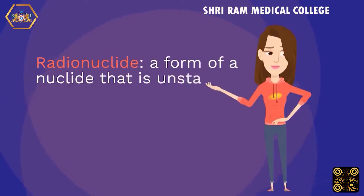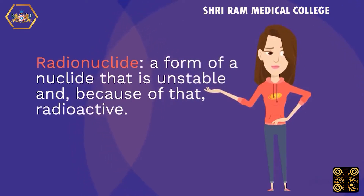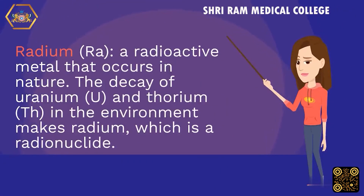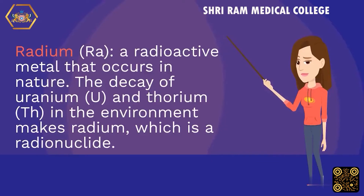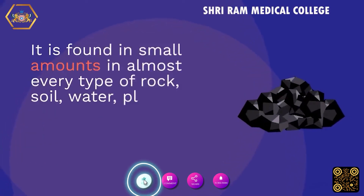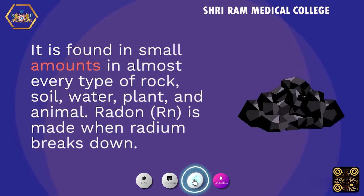Radionuclide: a form of a nuclide that is unstable and, because of that, radioactive. Radium (Ra): a radioactive metal that occurs in nature. The decay of uranium (U) and thorium (Th) in the environment makes radium, which is a radionuclide. It is found in small amounts in almost every type of rock, soil, water, plant, and animal.